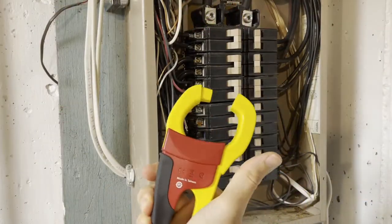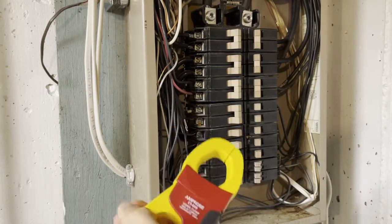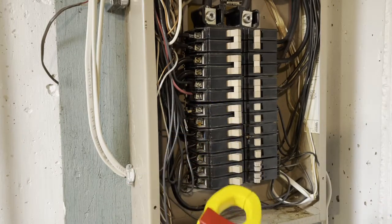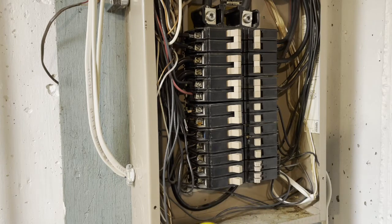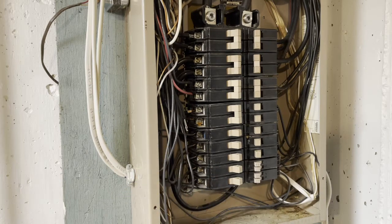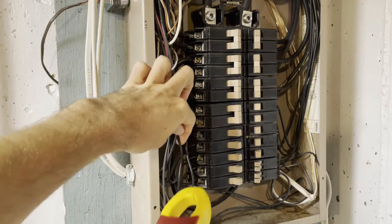Okay, step one. We're going to take our induction clamp. It doesn't matter which way we put it, and we're going to clamp over the breaker circuit that we care about. I'm going to go over my second from the bottom, number 21. Kind of got to get it in there, clamp like that.